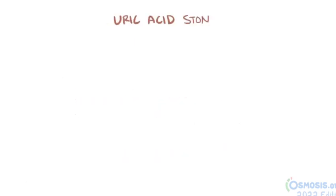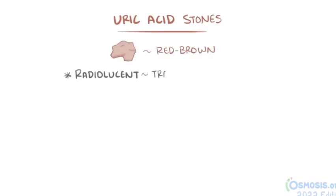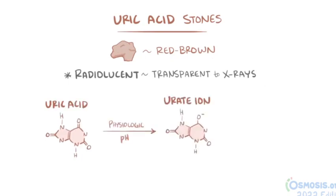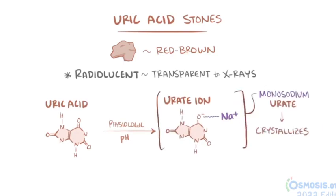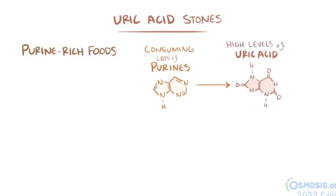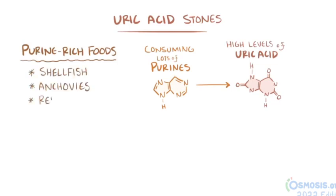There are also uric acid stones, which are red-brown in color and radiolucent under an x-ray, meaning that they're transparent to x-rays and don't usually show up very well. At a physiologic pH, uric acid loses a proton and becomes a urate ion, which then binds sodium, forming monosodium urate which crystallizes and ultimately forms uric acid stones. Since uric acid is a breakdown product of purines, a very common reason for high levels of uric acid is consuming lots of purines. Purine-rich food includes shellfish, anchovies, red meat, or organ meat.